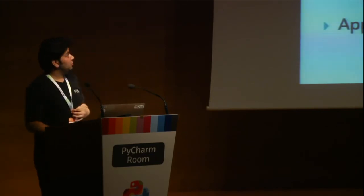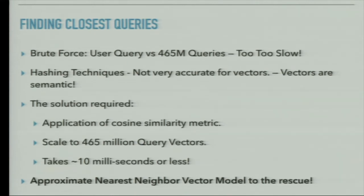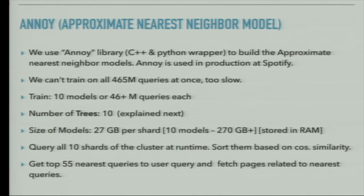The challenge is: given a user query, how do we find the closest 50 queries from 465 million? Brute force is too slow. Hashing techniques are not accurate enough for semantic vectors — even a small loss in precision could cause unreliable results. The solution requires a cosine similarity metric that scales to 465 million queries in 10 milliseconds or less. Our answer was the approximate nearest neighbor model called Annoy — a C++ and Python wrapper. Annoy is used in production at Spotify and now at Clix as well.